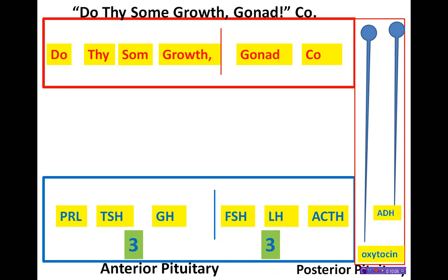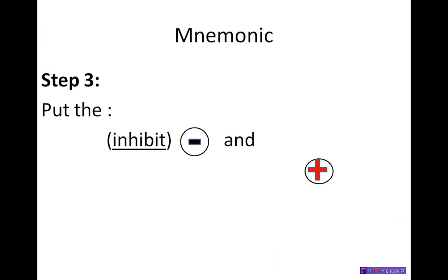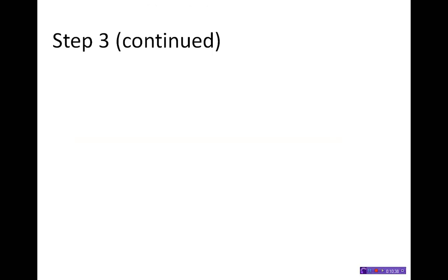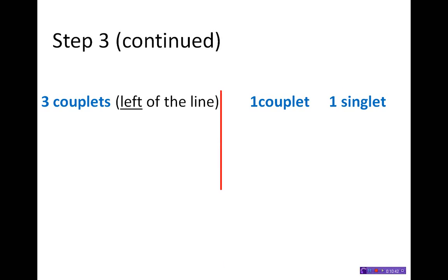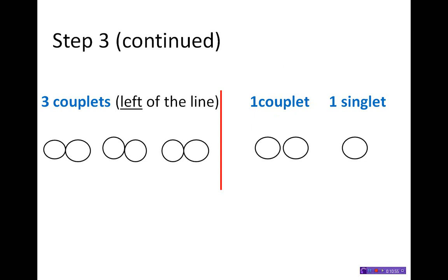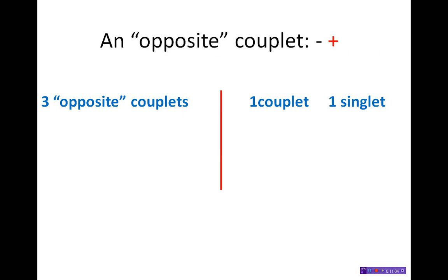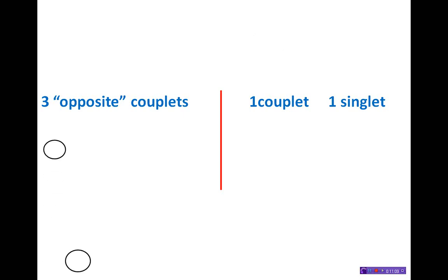Notice that in the bottom, the vertical line in the rectangle splits the hormones three and three — at the top there are four hovering over the left three and two over the right three. Step three: we want to put inhibitory negative signs and stimulatory positive signs between the two rectangles in that middle area. There are three couplets to the left of the line, and one couplet and one singlet to the right. An 'opposite couplet' means one positive and one negative (or negative and positive) paired together.